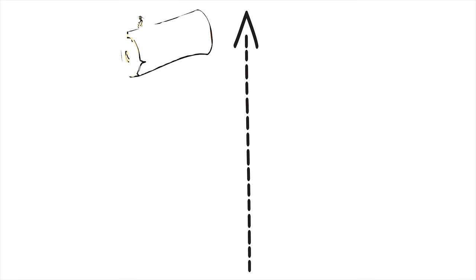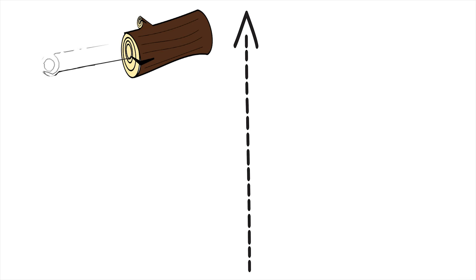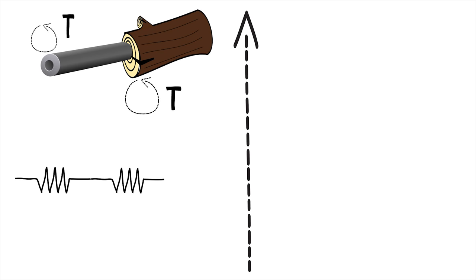If two or more shafts of different material, diameter, or basic forms are connected together in such a way that each carries the same torque, then the shafts are said to be connected in series and the composite shaft so produced is therefore termed as series connected.